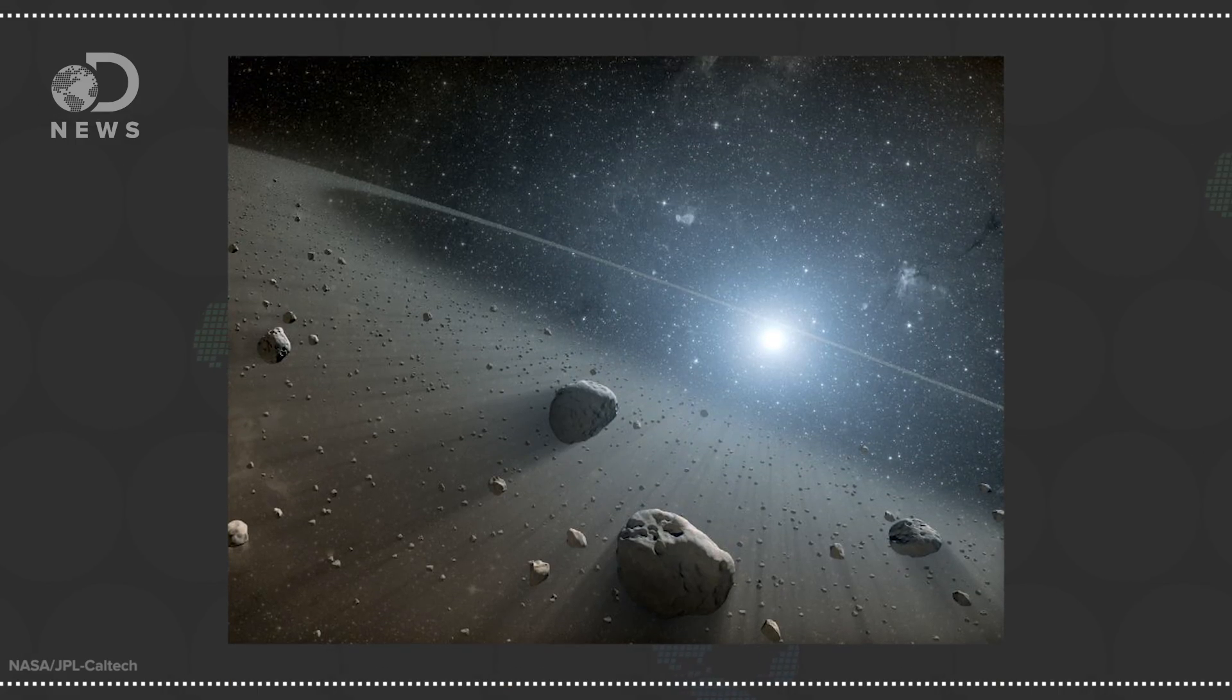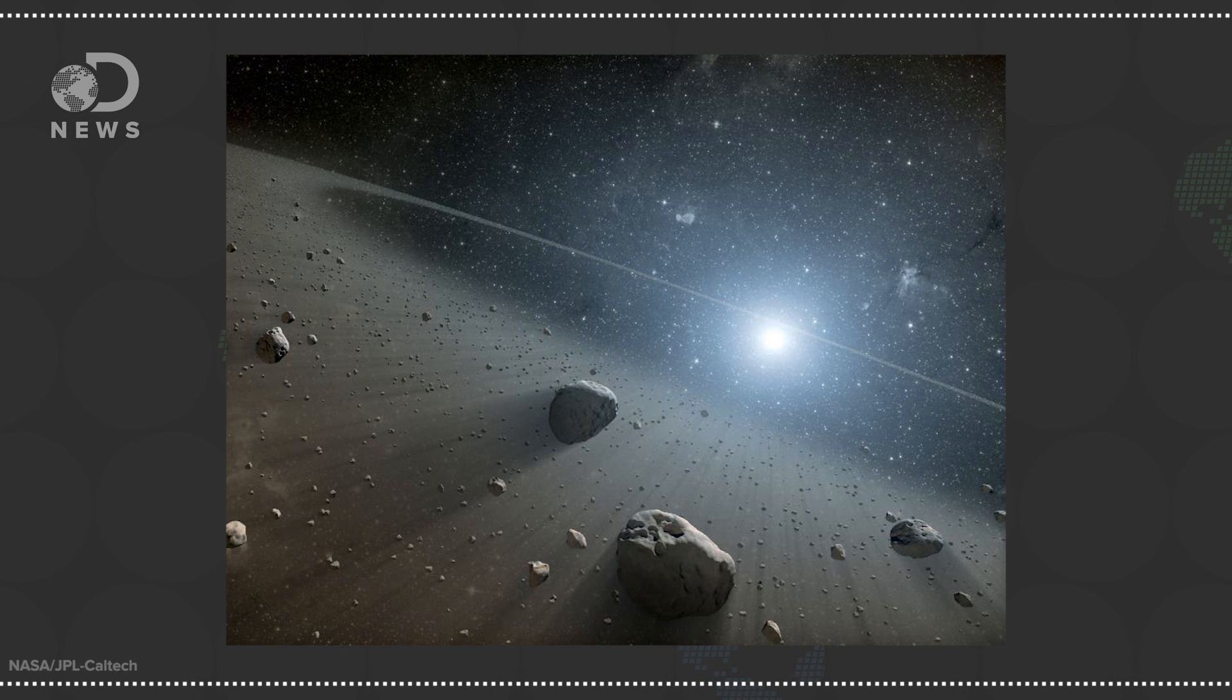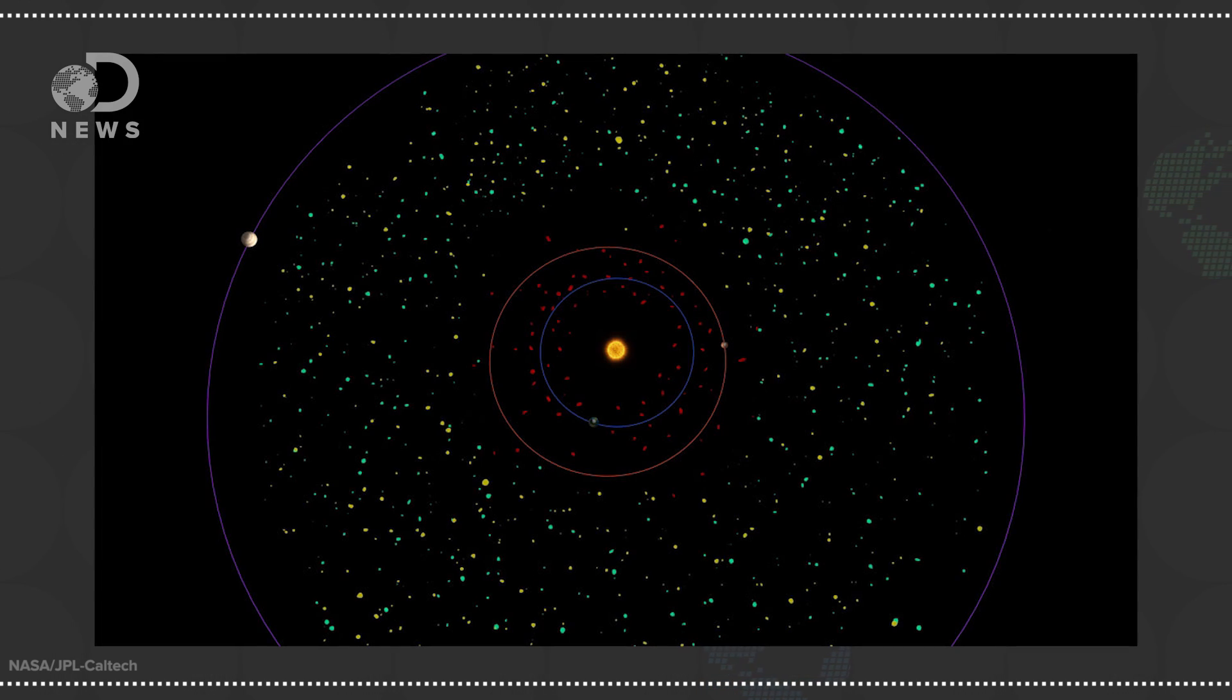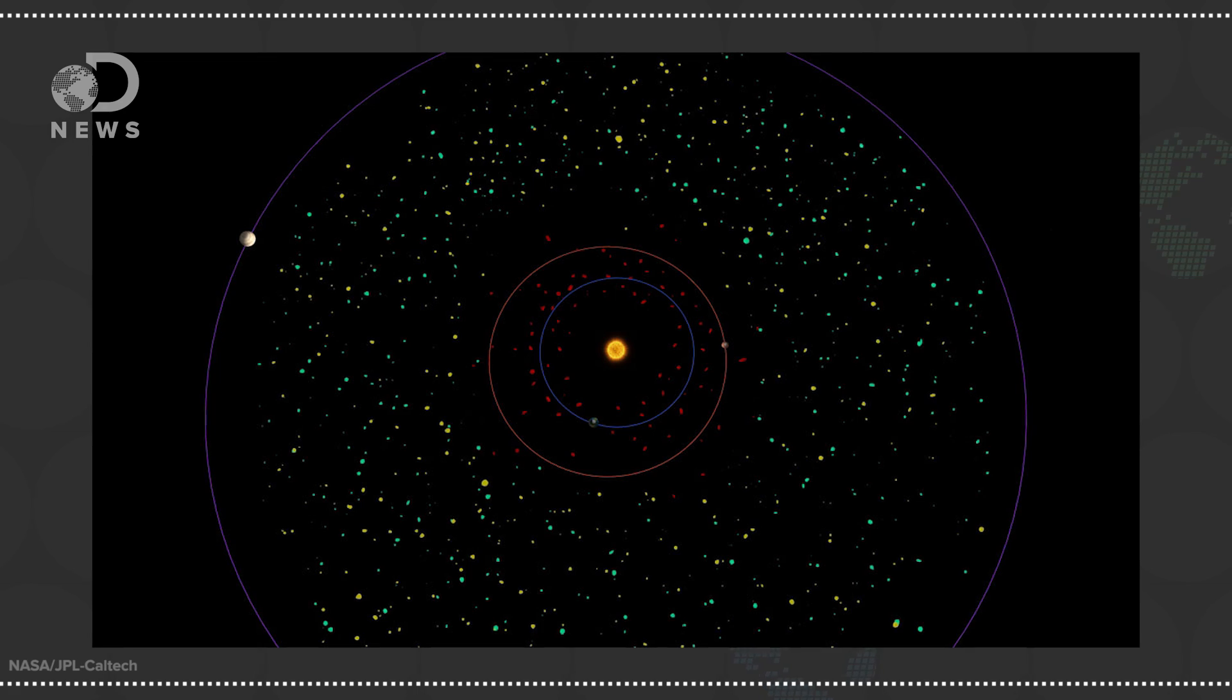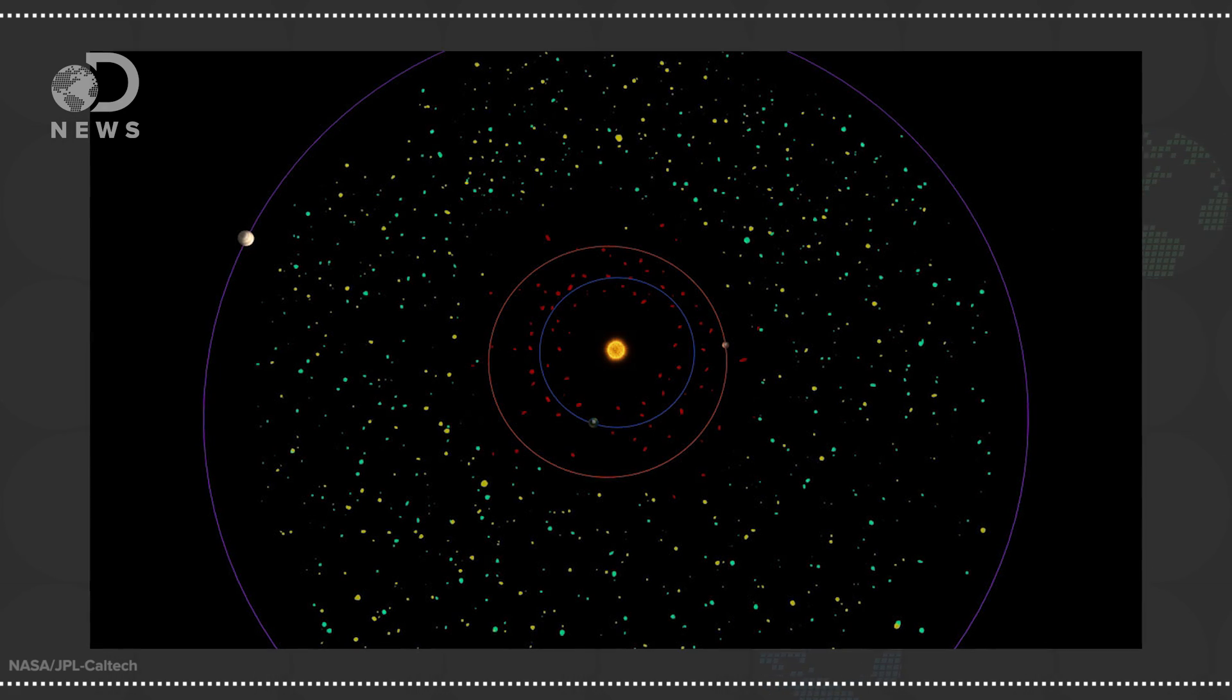The asteroid belt, which strangely doesn't have a name, it's just called the asteroid belt or main asteroid belt, sits between 2 and 4 astronomical units from the Sun, past Mars and before Jupiter. It's comprised of millions of space rocks, ranging in size from small particles to the largest known asteroid, Ceres, which is 600 miles in diameter.